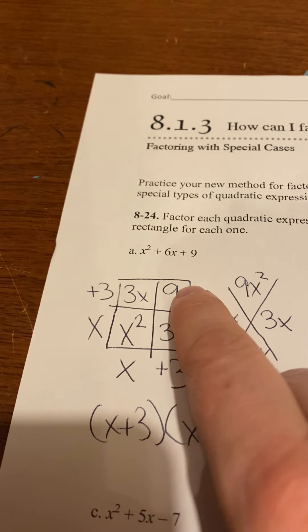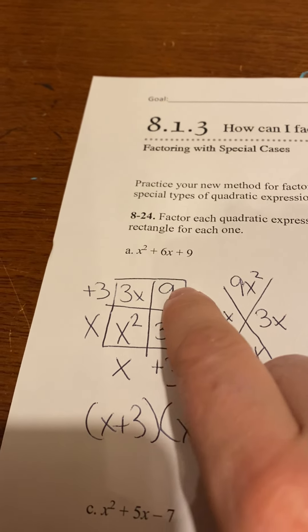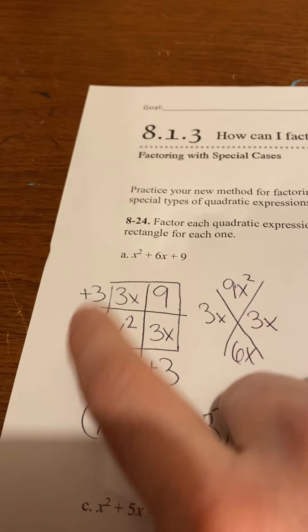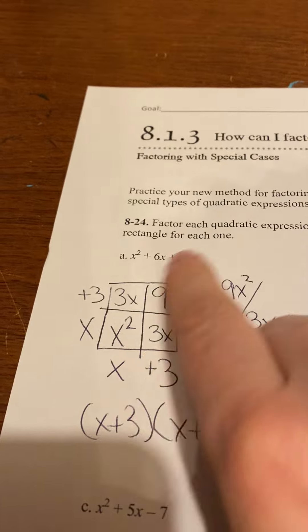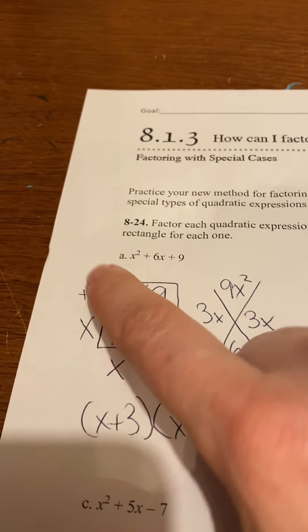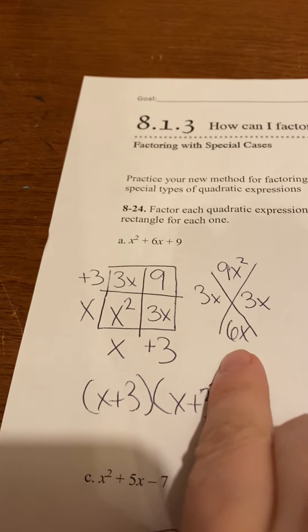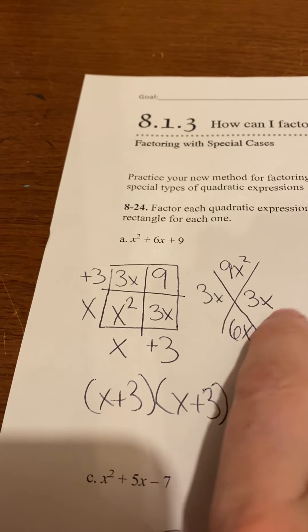Once you get that information, then you can start your diamond problem. You need things that will multiply to be 9x squared because remember your diagonals will multiply to be the same thing. So you need these two to multiply to be 9x squared and add to be 6x. So that would be 3x and 3x.